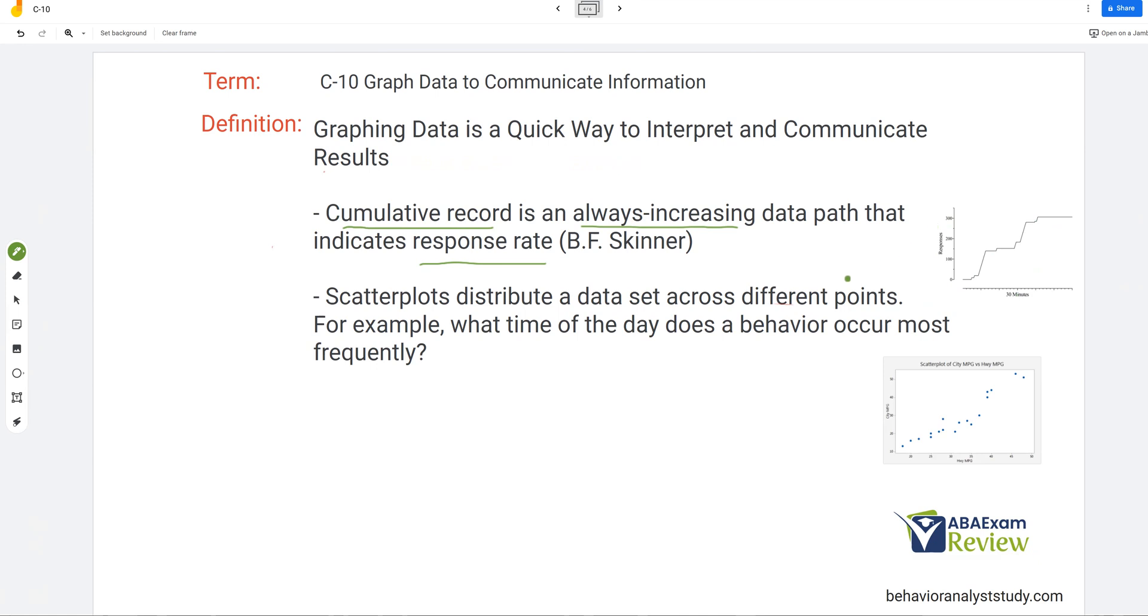And then scatter plots. You might use scatter plots if you are trying to determine what time of day a behavior occurs most frequently. So you'll have your time of day and your behavior, and they'll intersect, and it's going to give you a good idea of when that behavior might occur. So they distribute data across different points on these plots. It's a different way to view your data. Again, for most common graphs, you're going to be using a line graph almost all the time. Understand what the other three are. Scatter plots are good when you want to distribute that data and interpret it a little differently, when you want to look at how time is relative to the behavior in a different light.